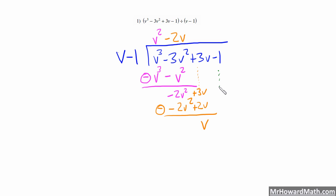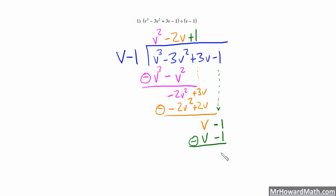Now I bring down the negative 1. So I now have v minus 1. What times v gives me v? Well, that's just a plus 1. So 1 times v is v — we're subtracting here, so that cancels. And 1 times negative 1 is negative 1. And negative 1 minus negative 1 is the same as negative 1 plus 1, which equals 0. So we have no remainder and we are done. So v cubed minus 3v squared plus 3v minus 1 divided by v minus 1 gives me v squared minus 2v plus 1.